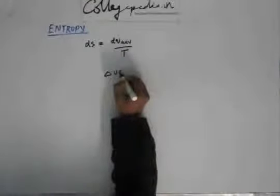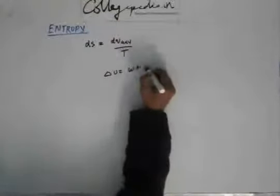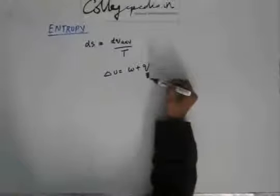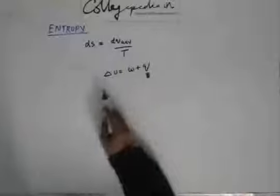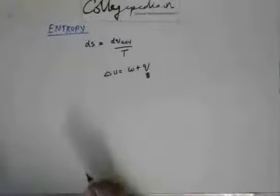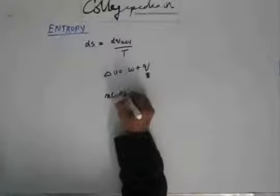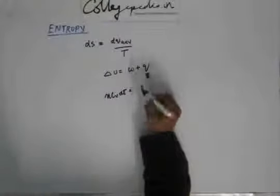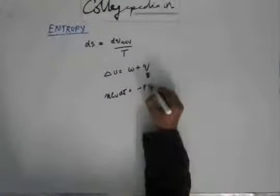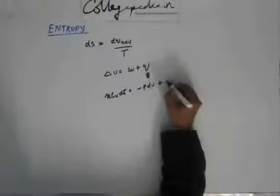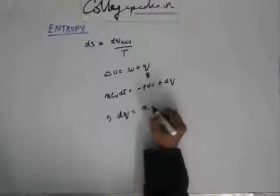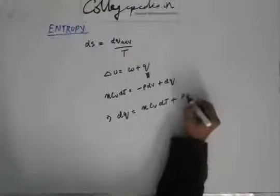We have to use thermodynamics' first law in order to get q, because the expression of the first law contains q, so it's convenient to derive the expression of q from the first law. Now, dU for an ideal gas is always nCv dT. If we look at a small change of internal energy, work done is -pdV, so dq = nCv dT + p dV.